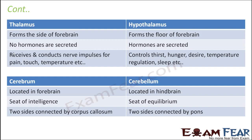Thalamus does not secrete any hormones, but hypothalamus secretes a lot of hormones, which we will look at in the next lesson on the endocrine system. Hypothalamus is an important part of the endocrine system and acts as a link between the endocrine system and the nervous system.